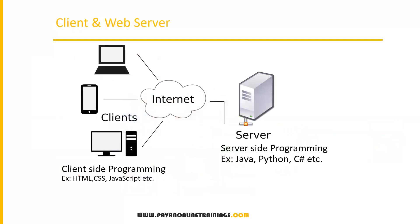Now, what is a client and web server? When working with web-based applications, the web server is a machine where applications are installed. Multiple clients can access those web applications — every client has a browser, and through the browser we access the applications over the internet. On the server side, business logic is implemented using programming languages such as Java, Python, or C#. This is called server-side programming.